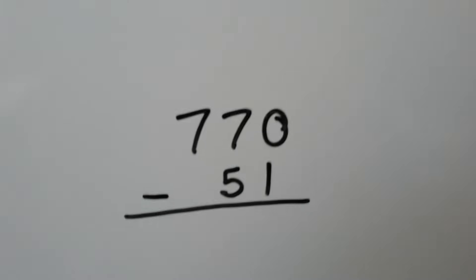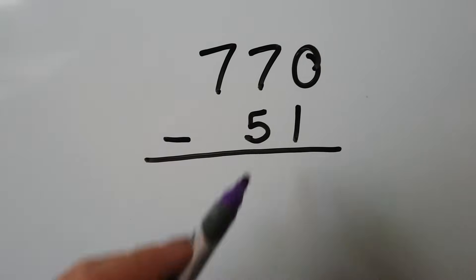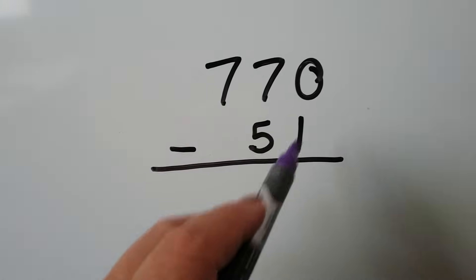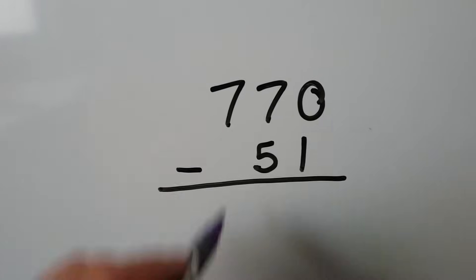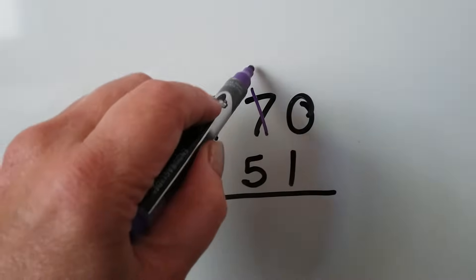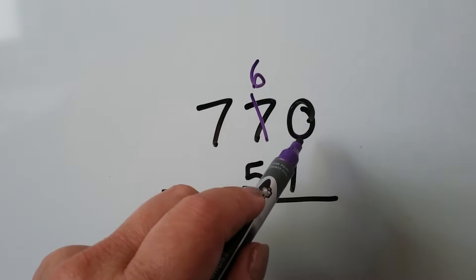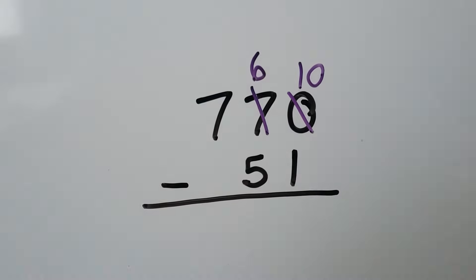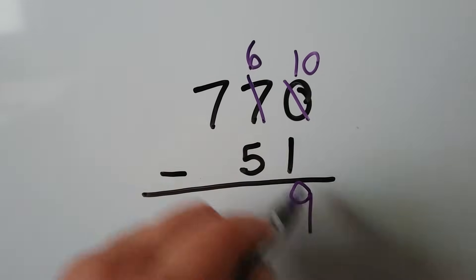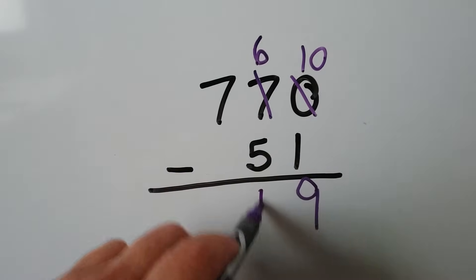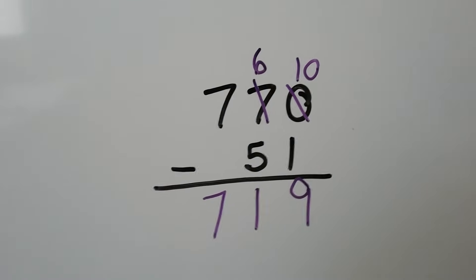Let's practice with 770 minus 51. We're only taking away 5 tens and 1 one. In the ones place we have 0 and need to take 1 away — we can't, so we ask the 7 tens for a ten. It becomes 6 tens, and we now have 10 ones. 10 take away 1 is 9, 6 take away 5 is 1, and we drop the 7 down. We have 719.